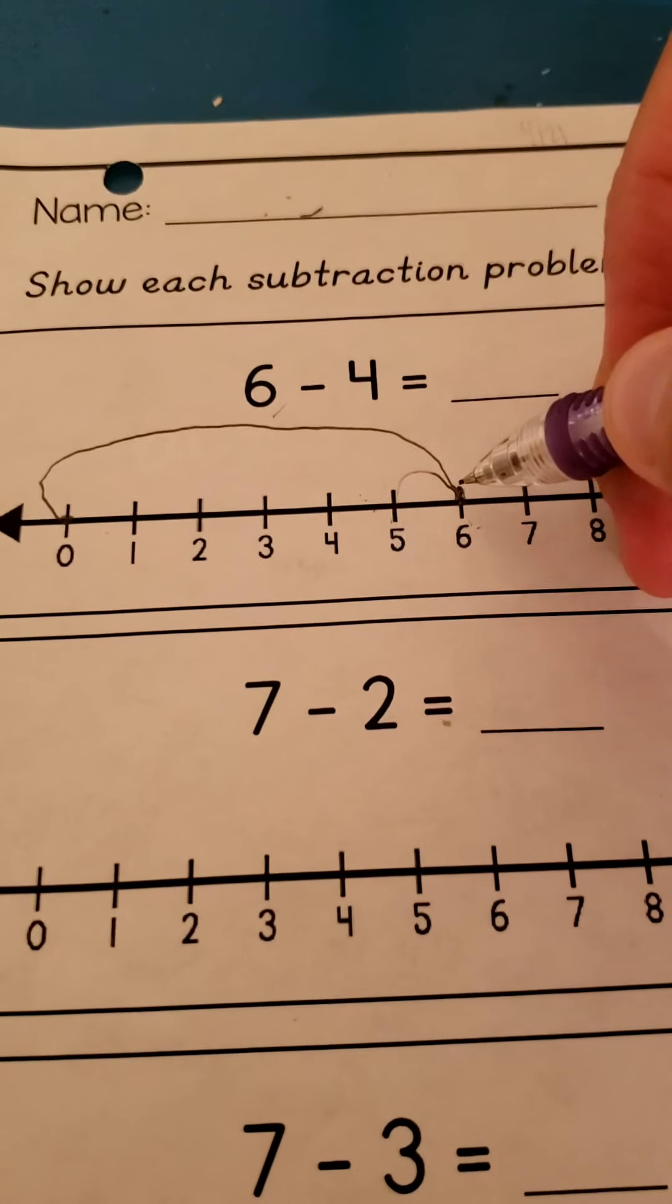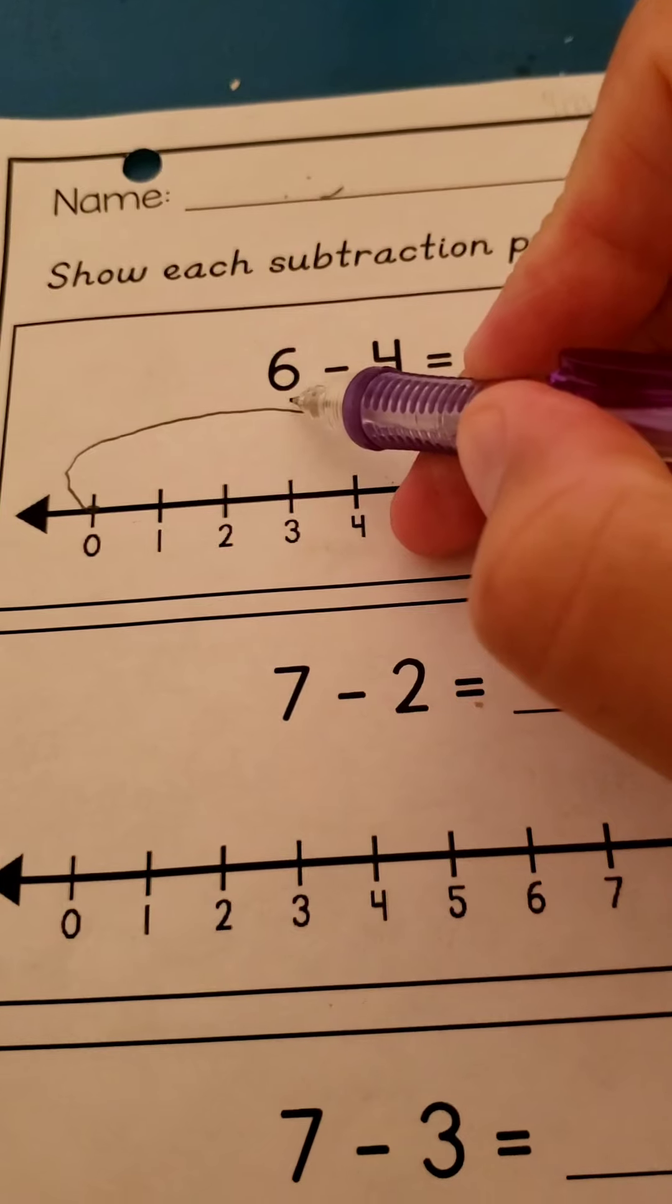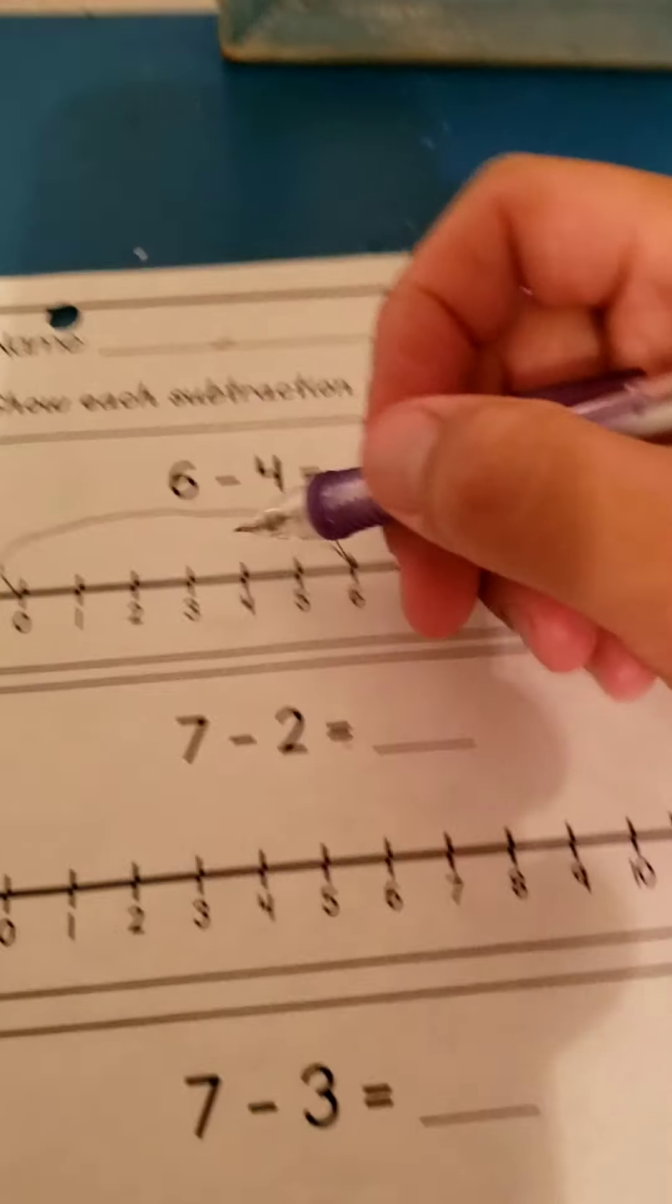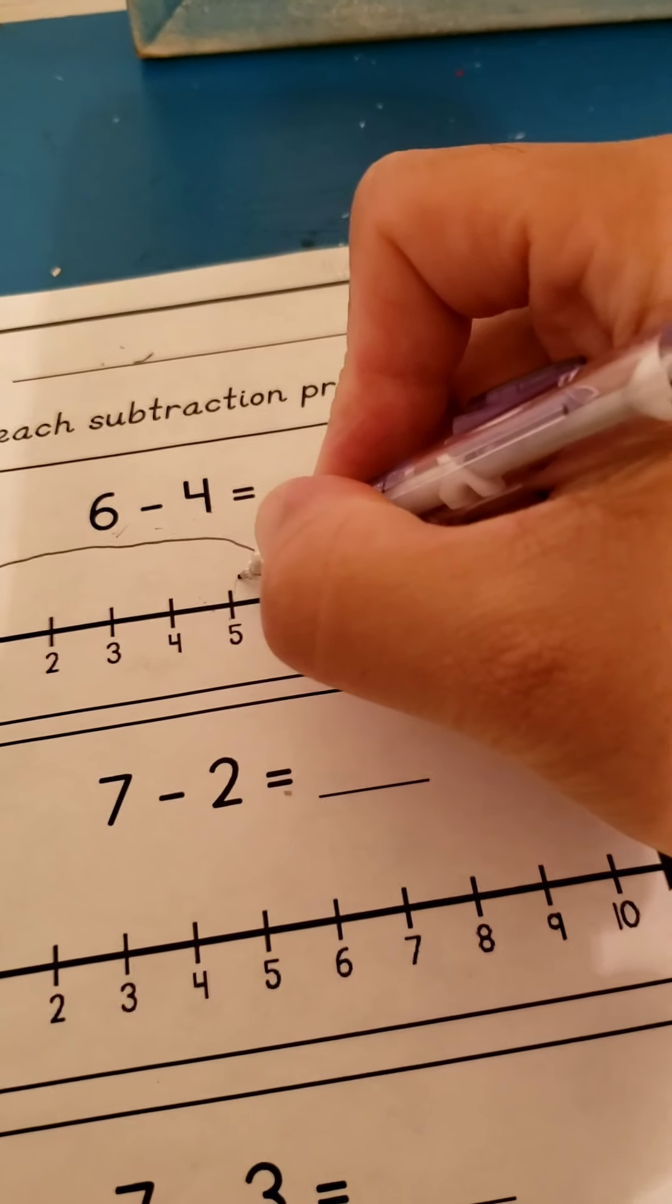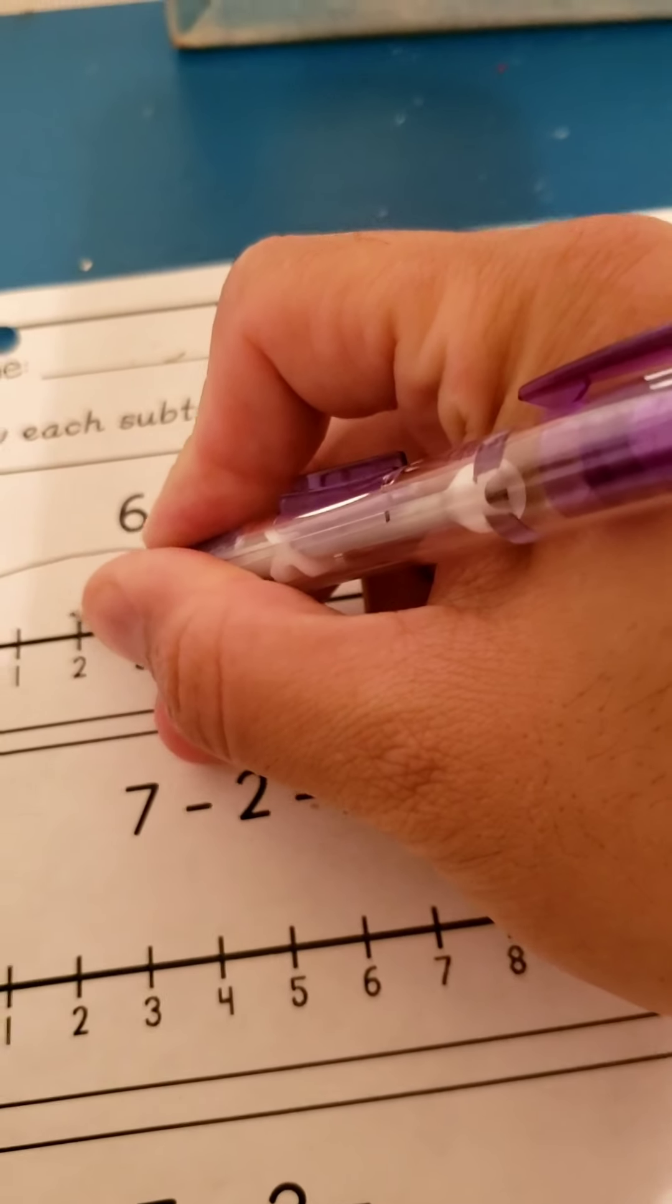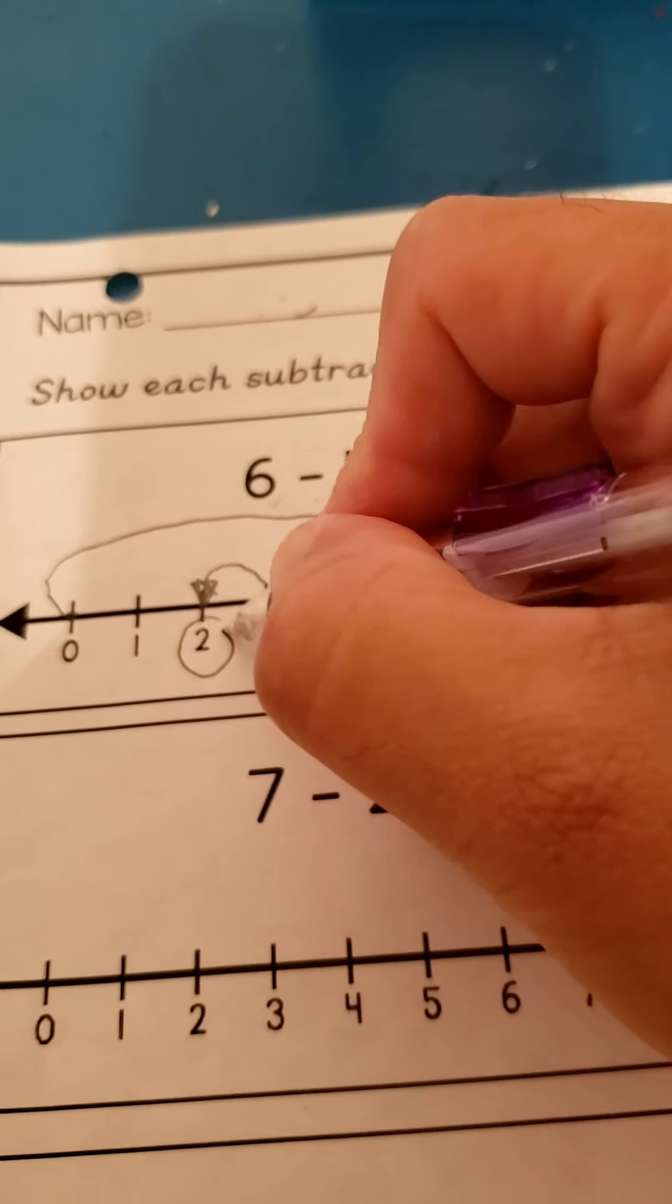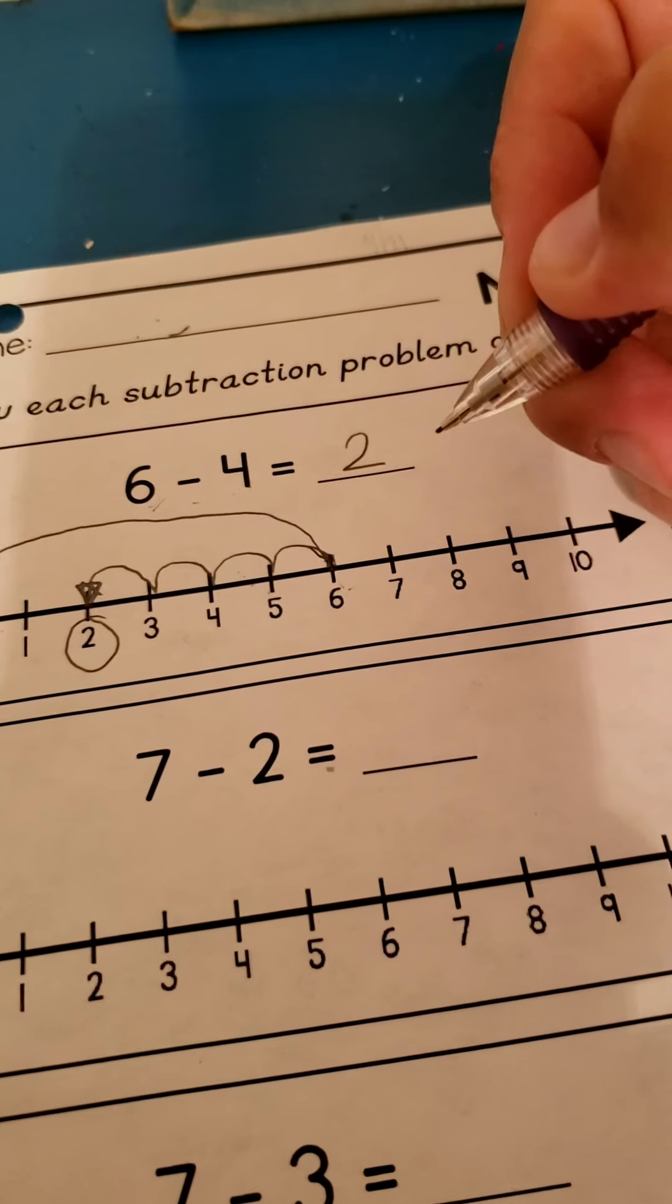Now you have to count four spaces to the left because you have six minus four. So you have to go to the left four times because you're subtracting. Here we go: one, two, three, four. Draw your little arrow. Four. So what's your answer? Two.